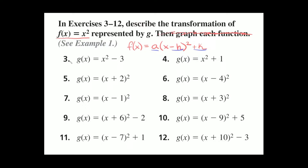Let's start with g of x equals x squared minus 3. Here we just have x squared plus or minus some number at the very end. This minus 3 is the same as the plus or minus k in the vertex form. Whenever you have a plus or minus some number at the very end, that just moves the parabola up or down. Here we have negative 3, so it moves it down — the transformation is a translation down three spaces.